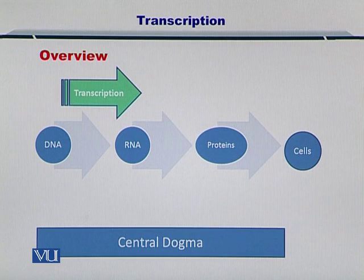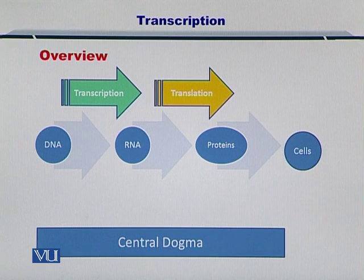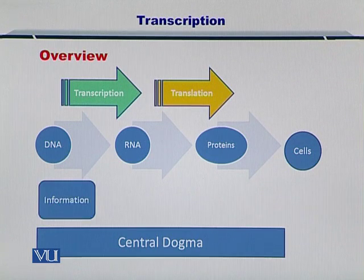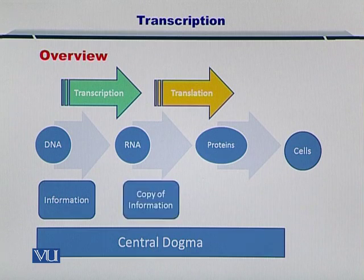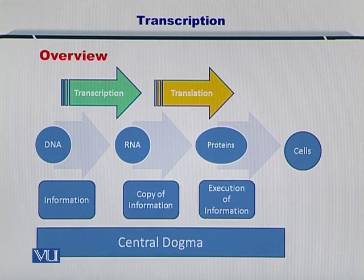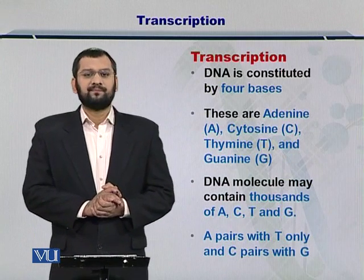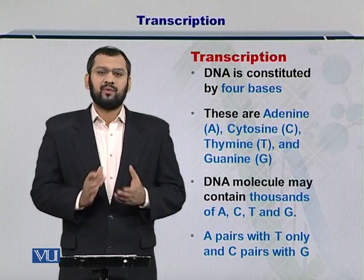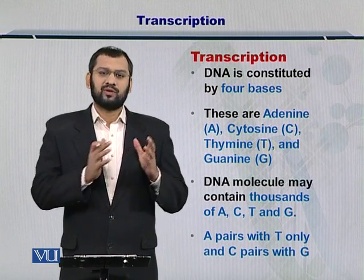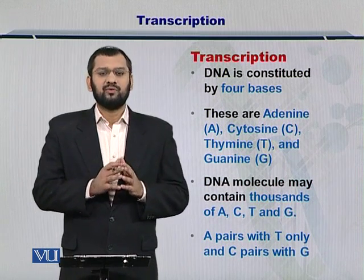The DNA is double stranded while the RNA is single stranded. Following this, the process of translation is there — we will look at it later. During transcription, information from the DNA is converted into the RNA. A copy is therefore created which is used in creating the proteins, which are the executive molecules responsible for execution of the information. Transcription, therefore, is a process by which the four nucleotide bases within the DNA are converted into the RNA.